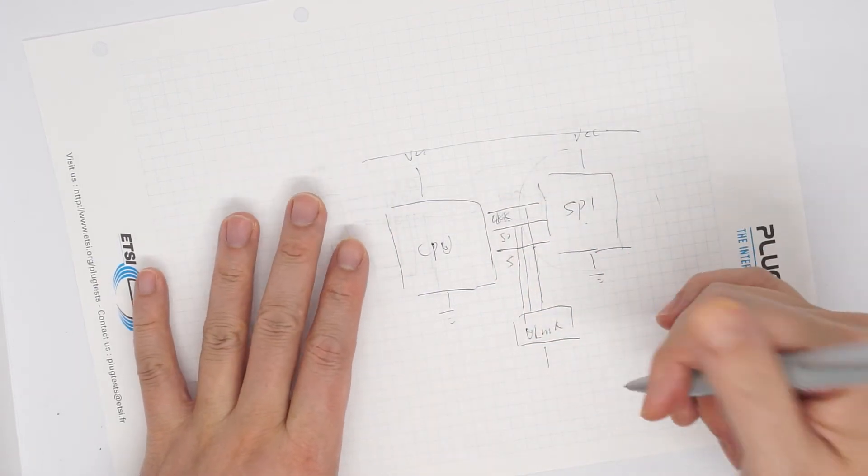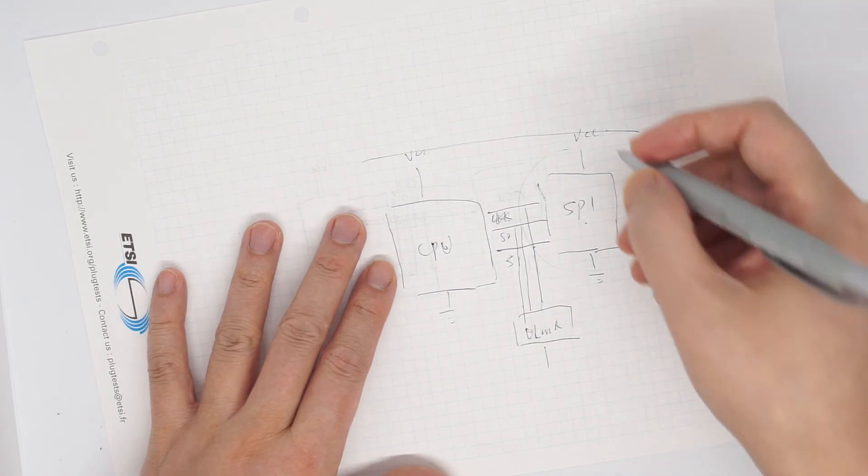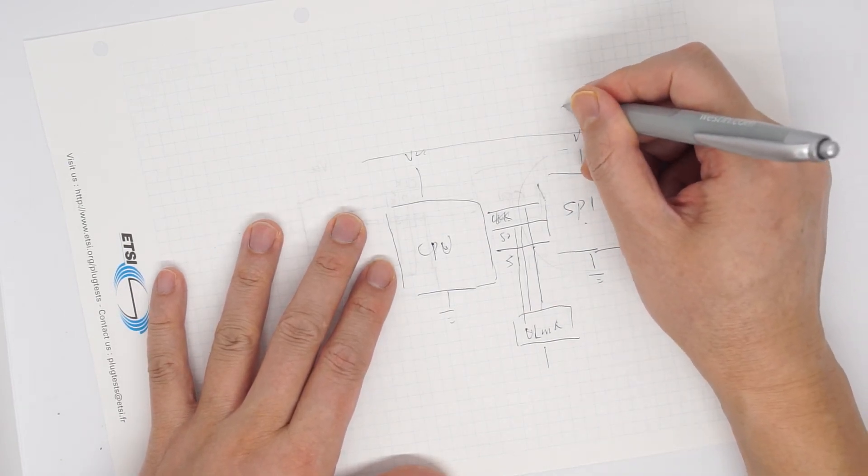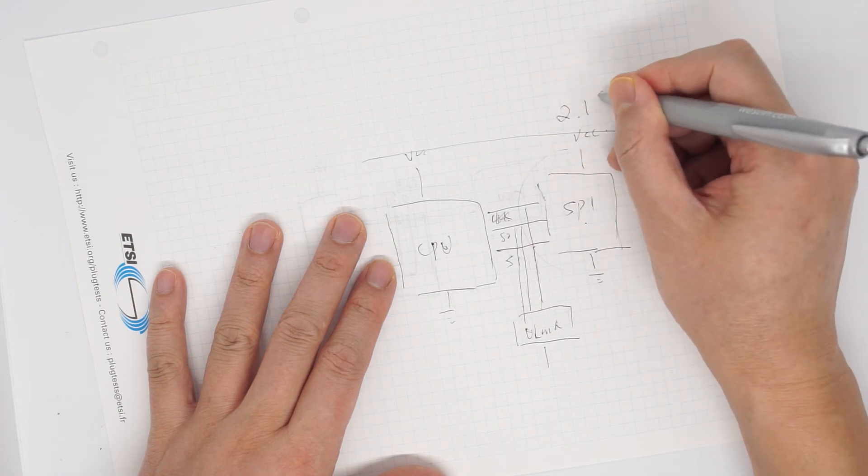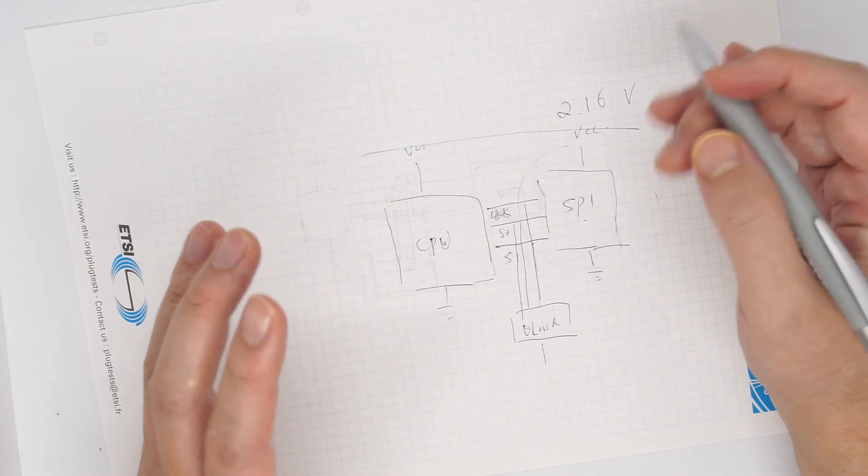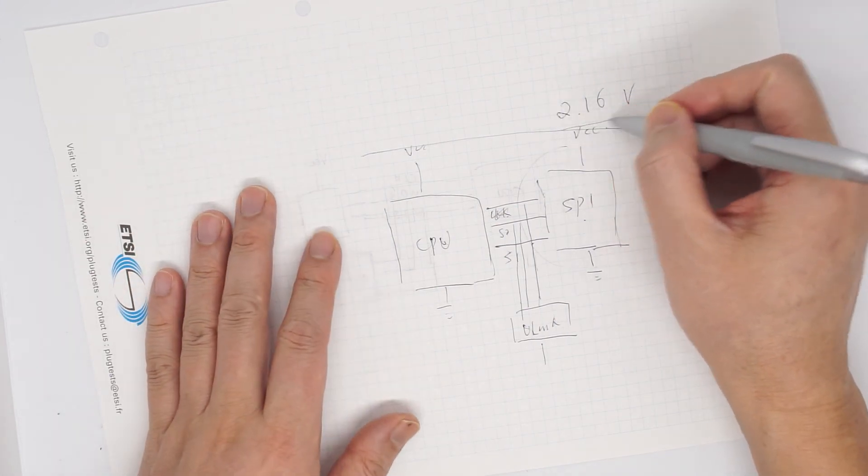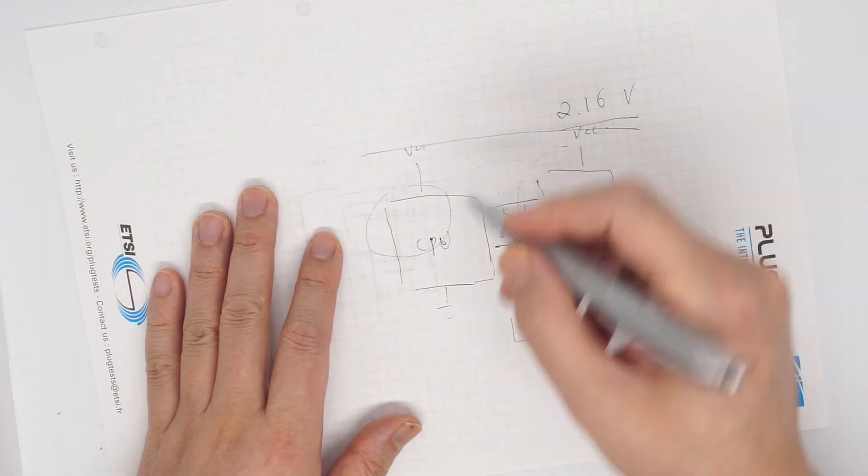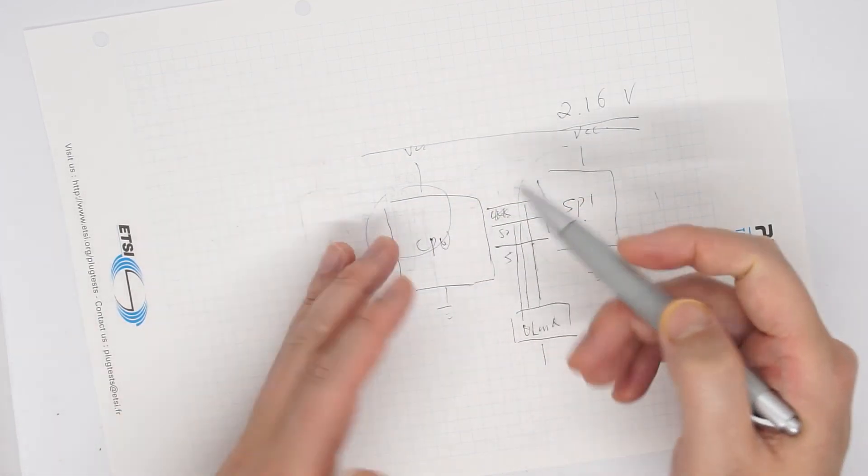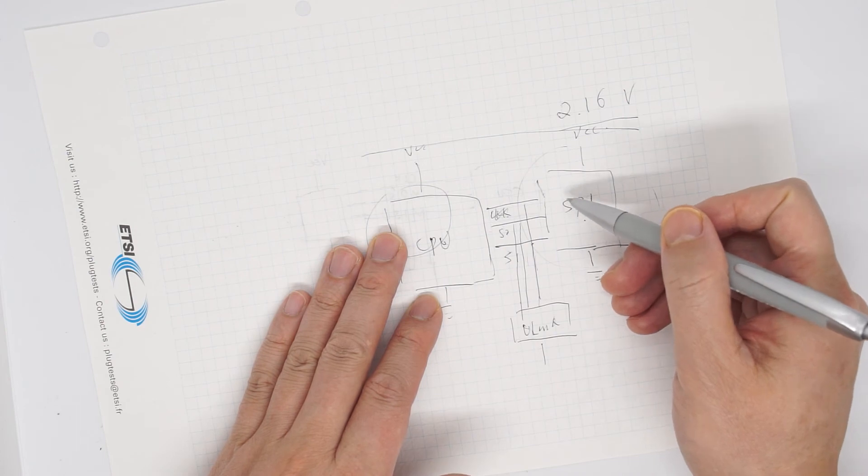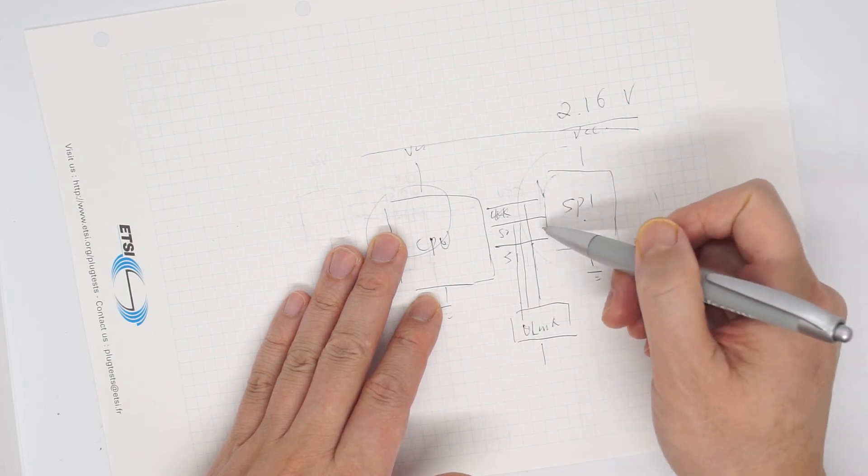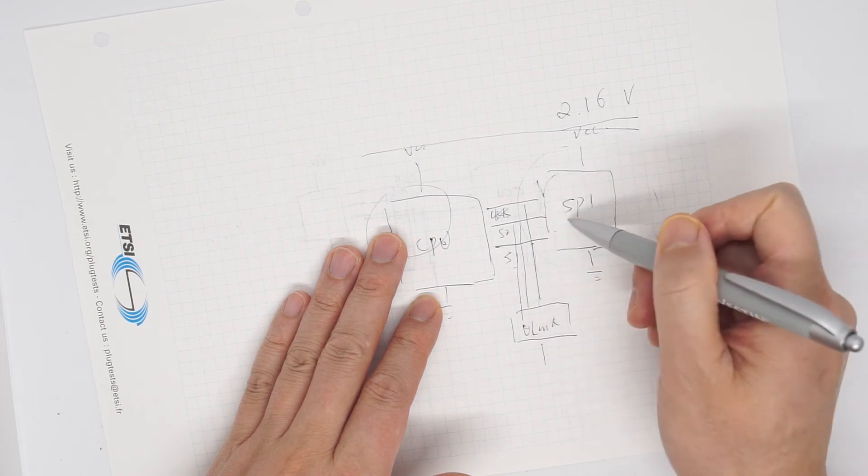So the trick here now is we're trying to manipulate this power. Let's say we put this to a 2.16 volt and this is what I've found is it's like a sweet spot. When we have this power, this CPU seems to be in idle state. It does not have enough juice to power on. However, it does give enough power to power the SPI chip so we can talk to each other.